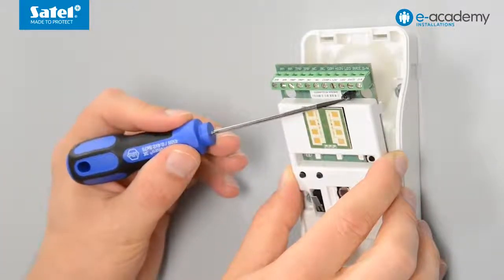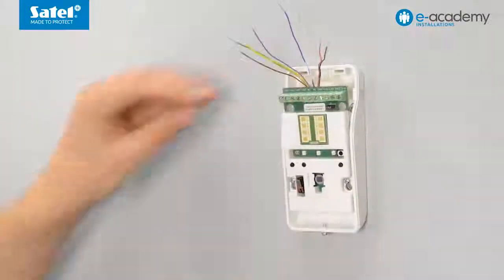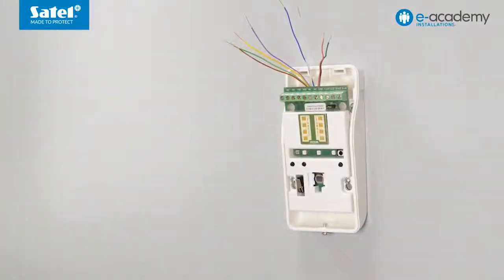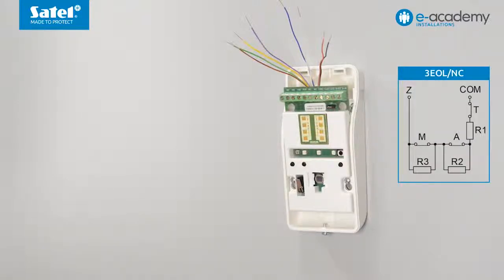Secure the electronics board in the enclosure base. How the detector is connected to the input must correspond to the configuration selected for that input. In this video, the detector is connected according to the 3EOL/NC configuration. The detector outputs are designated on the drawing with the following letters: A for alarm output, T for tamper output, M for anti-masking output.